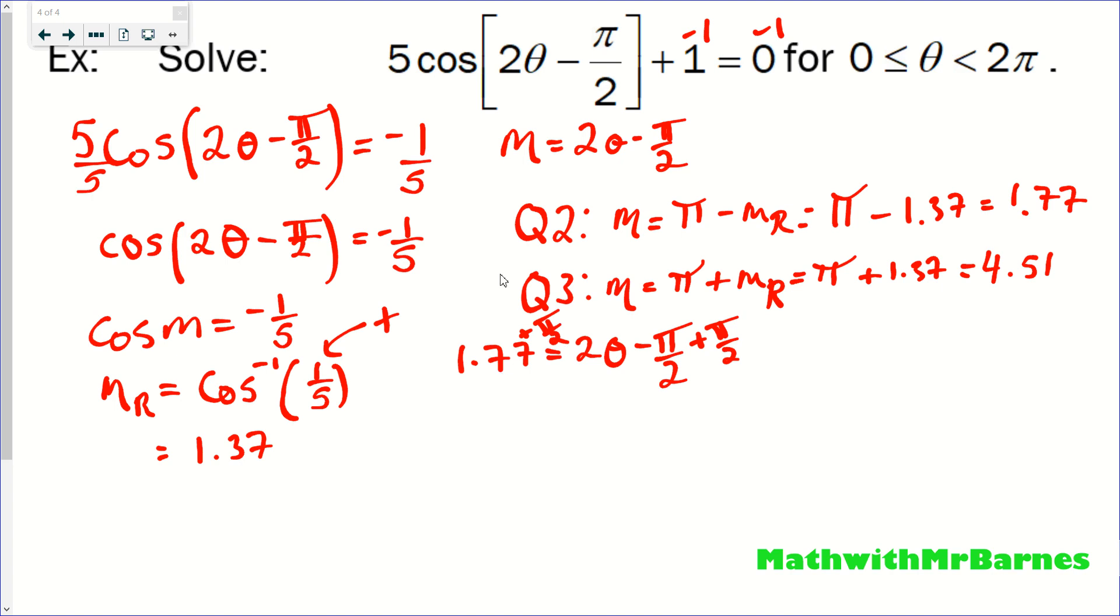So you add pi over 2 to both sides, just like that. I'll just quickly add that together now, 1.77 plus pi over 2. And I end up with 3.34 equals 2 theta. Divide both sides by 2. Theta equals... Let's see what that gives us, 1.67. So that's my first solution from the CAST rule.